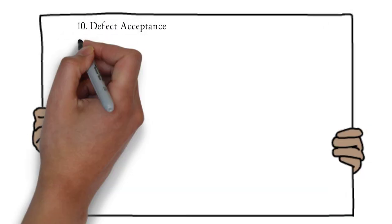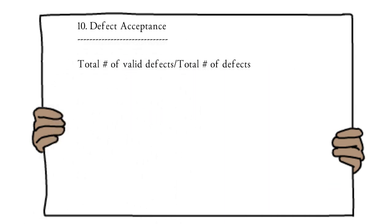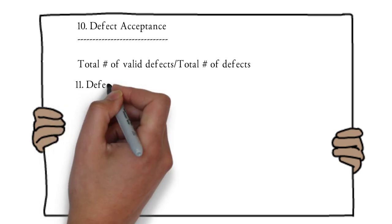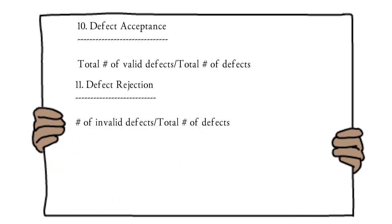The next metric is defect acceptance. Testers may raise both valid and invalid defects. To find the percentage of defects accepted by the development team: (total number of valid defects / total number of defects raised) × 100. Similarly, invalid defect percentage = (total number of invalid defects / total defects raised) × 100.